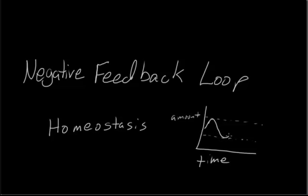When it gets to the bottom of the acceptable range, some mechanism is going to bring it back up and then back down. So our goal with our negative feedback loop is to keep all of these values within this homeostatic range.